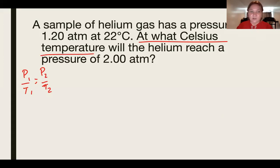At what Celsius temperature? So I'm solving for T2 again. This formula could be super complicated. Put that up there. P1 goes down. T1 goes up. So T1 P2 over P1.